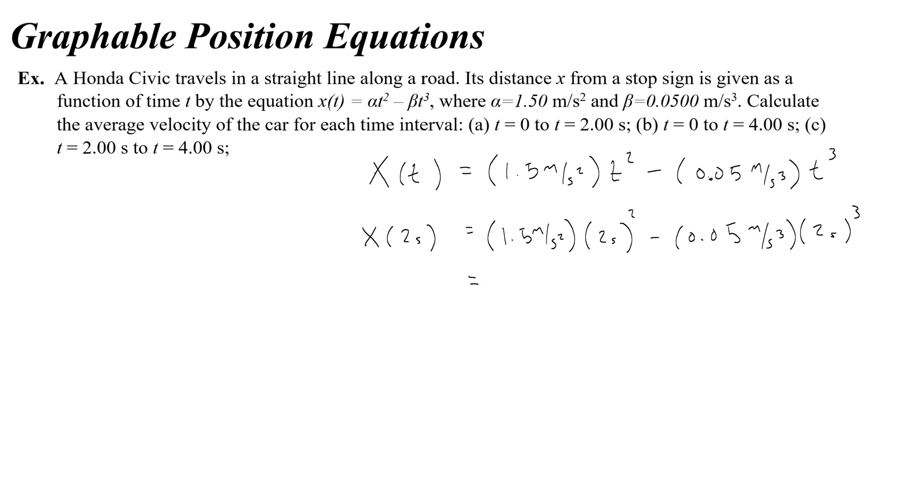And what I'm going to get is 1.5 meters per second squared times four seconds squared minus 0.05 meters per second cubed times eight seconds cubed. Okay, so think about why we needed to have an s cubed and an s squared here.